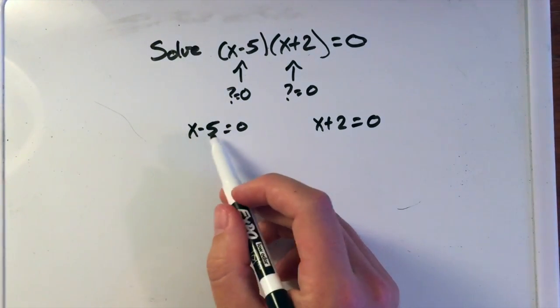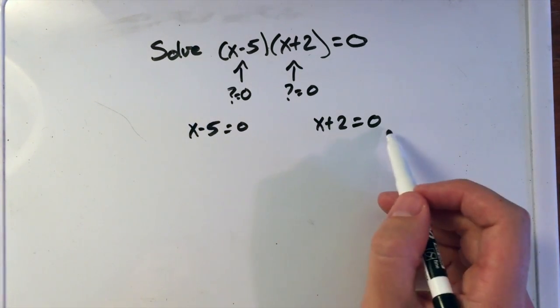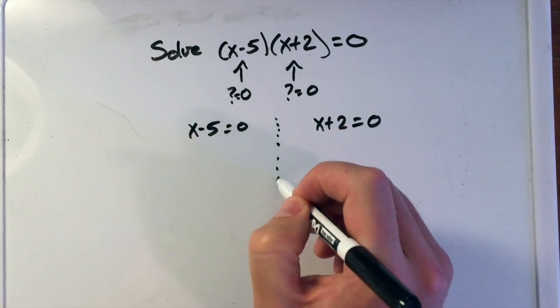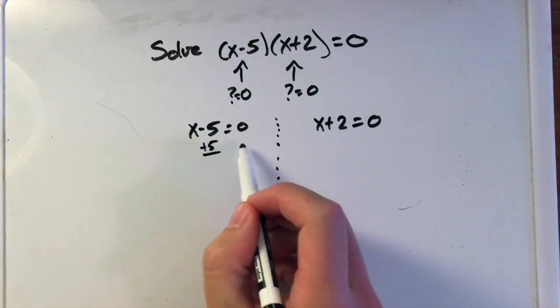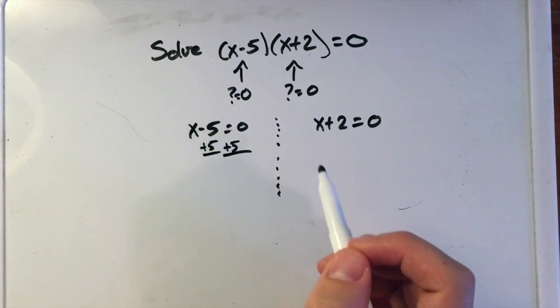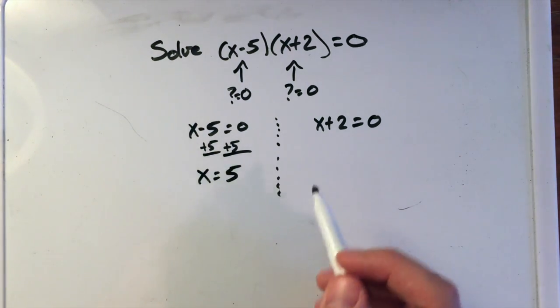So if we have x-5=0 here and x+2=0, we have two separate equations that we want to solve for the final answer. Well, this one here, we have to add 5 to both sides, right? And we're left with x equals positive 5.